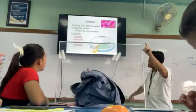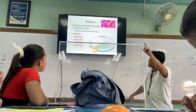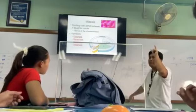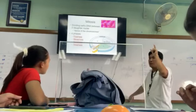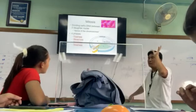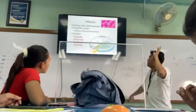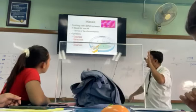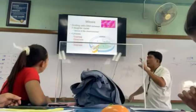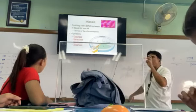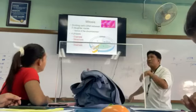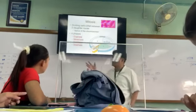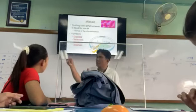Mitosis is already the cell division process, or the division of the DNA. So two daughter cells are produced, and there is a balancing of chromosomes because chromosomes are moved.